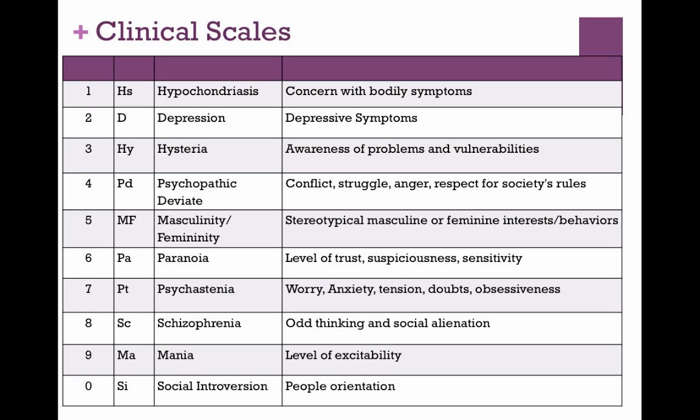Scale eight is the schizophrenia scale. People with high elevations here may have a psychotic disorder and show really odd, eccentric behavior. But not everybody with elevations on this is schizophrenic — they could be so socially alienated due to high social anxiety that they've isolated themselves, or it could be something more clinical. There are also a lot of sensory items on this scale asking things like: do you see visions others don't see? Are you being followed?